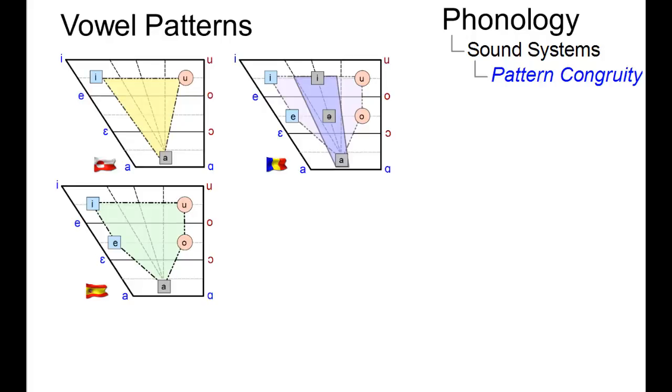These examples show that languages seem to develop geometrical vowel patterns. Each front vowel has a corresponding back vowel and vice versa. This phenomenon has become known as pattern congruity.